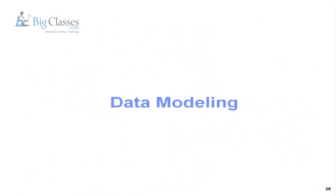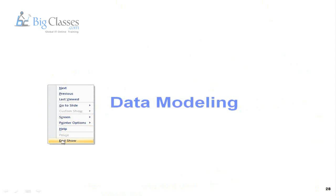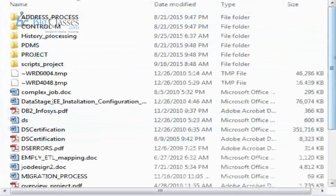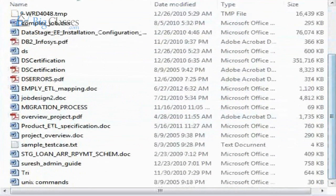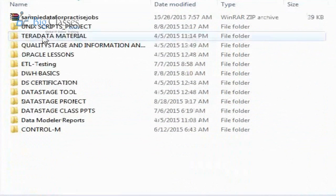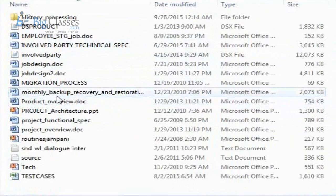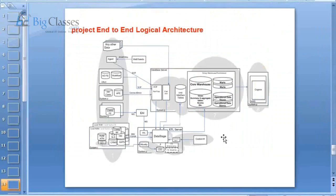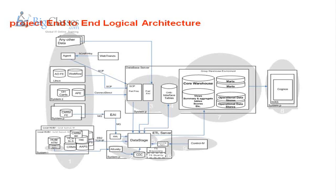Let me show you some of the project-related documents I'll use during the course. I'll share all materials with you. Here is one of the project architecture diagrams. While discussing data warehousing architecture, I'll explain what the front-end system is. In this diagram you can see there are different layers, each with a number representing a specific layer.